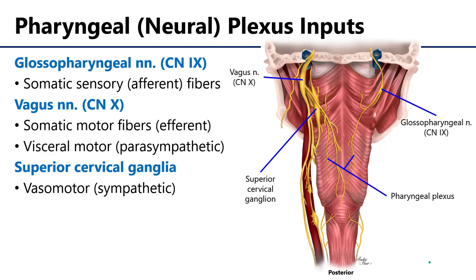For the pharyngeal neural plexus, this is no exception — the vagus nerves also contribute visceral motor fibers to the plexus. To balance out those visceral motor fibers, there are fibers to the pharyngeal neural plexus from the superior cervical ganglia of the sympathetic trunk, predominantly visceral motor fibers to the vasculature as well as the mucosa that lines the pharynx.